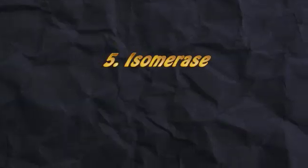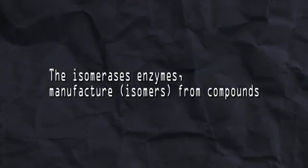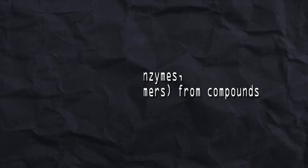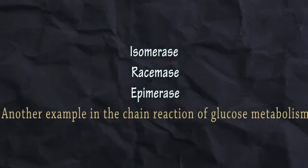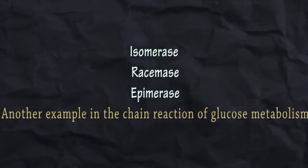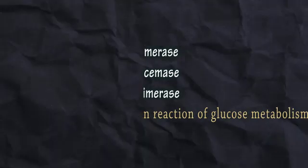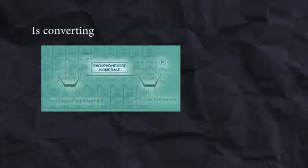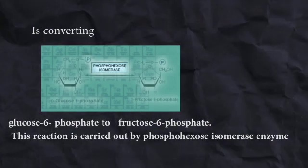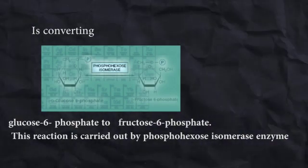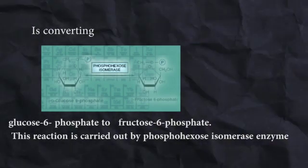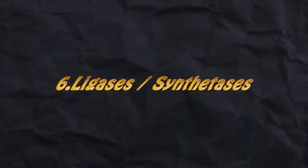The fifth type is Isomerases. Isomerase enzymes manufacture isomers from compounds, such as isomerase, racemase, and epimerase. Another example in the chain reaction of glucose metabolism is converting glucose-6-phosphate to fructose-6-phosphate. This reaction is carried out by phosphohexose isomerase enzyme.